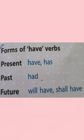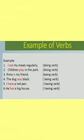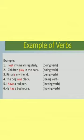Now let's see some examples of how verbs are used to denote action, being, and position. Eat and play are the action or doing verbs — they tell us what I do (I eat) and what the children do (they play). In 'Rima is my friend' and 'The dog was black', is and was are the being verbs. In 'They have a red pen' and 'He has a big house', has and have are showing position — that is, to whom the thing belongs.